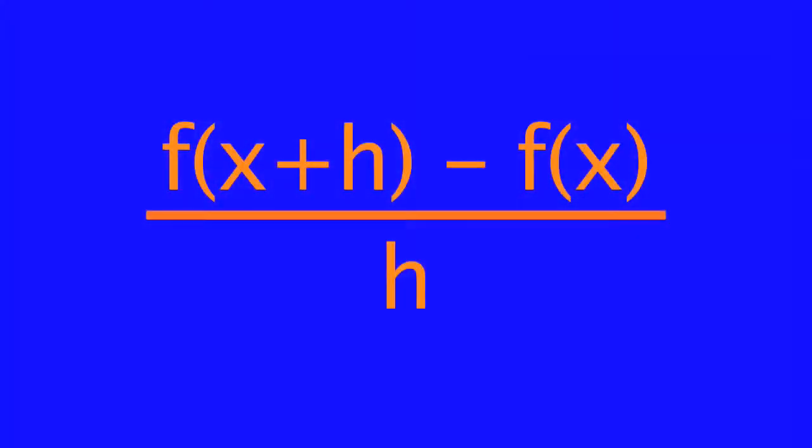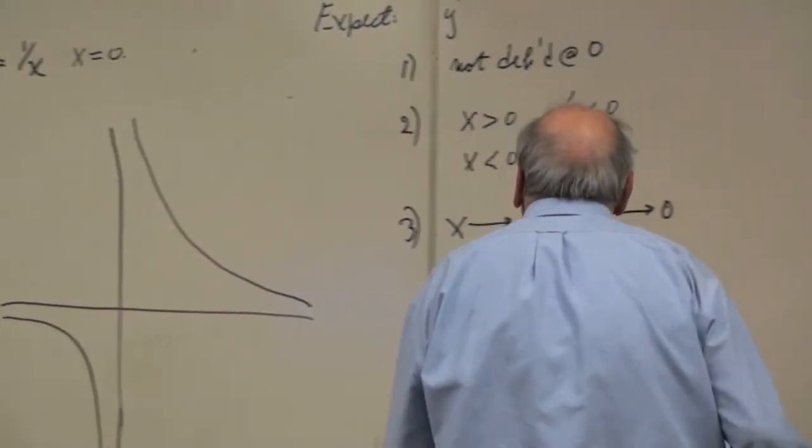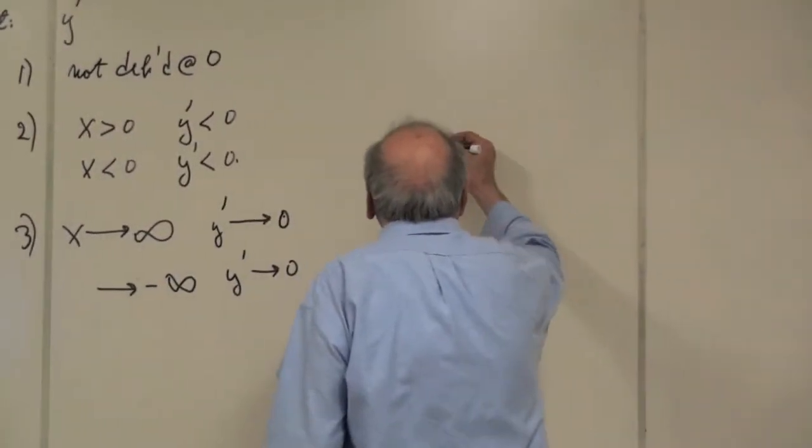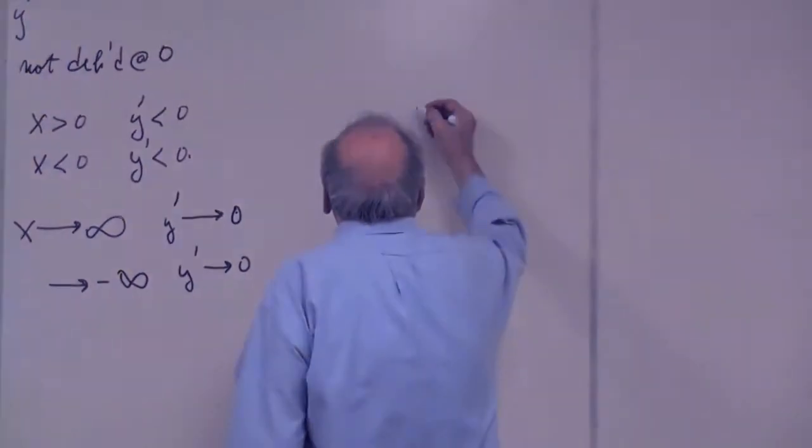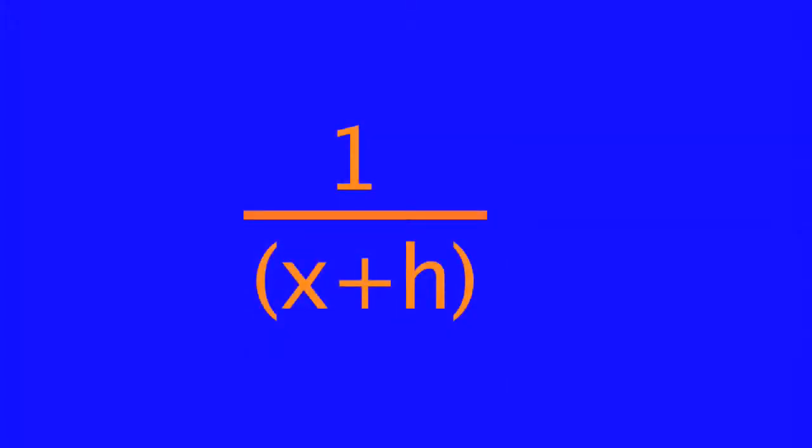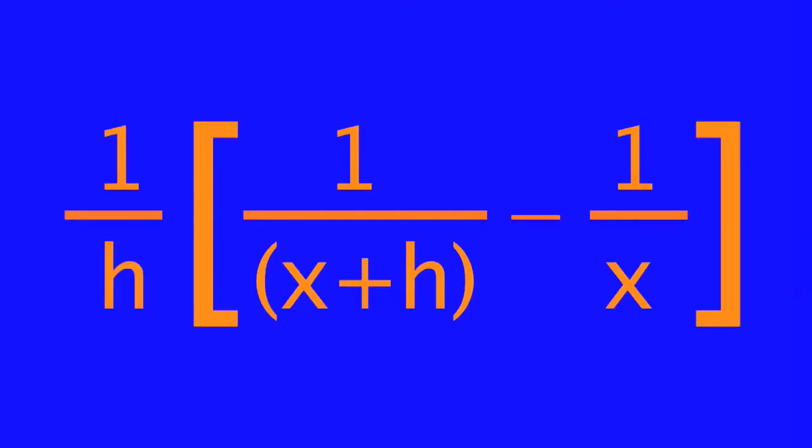f of x plus h minus f of x over h. This is the magic formula that we do over and over and over again. So we have 1 over x plus h minus 1 over x. And I don't like these huge fractions, so I'm going to stick the 1 over h out in front here.